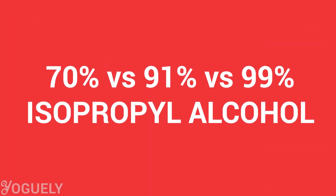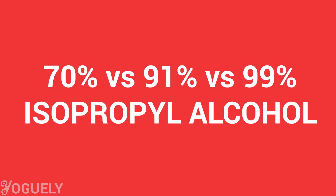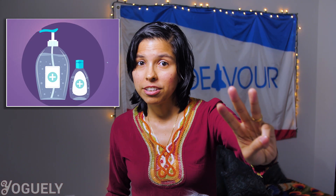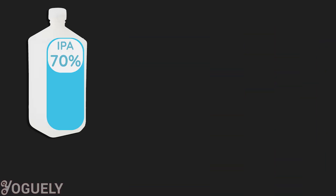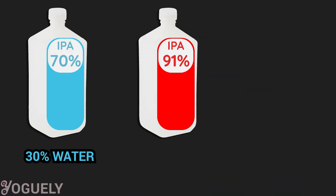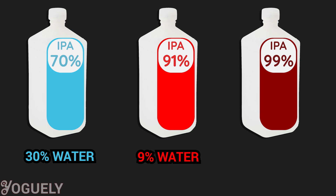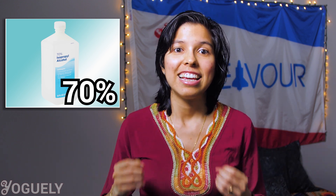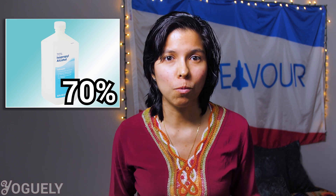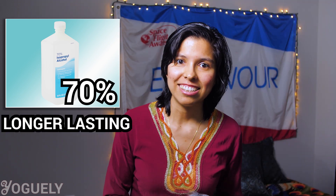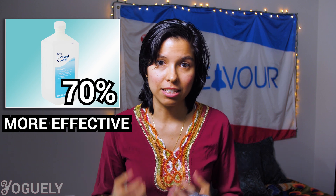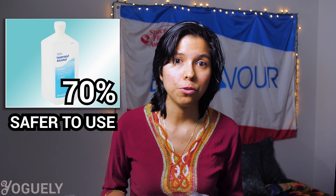What's the difference between 70%, 91%, and 99% isopropyl alcohol? You've probably seen three concentrations of diluted isopropyl alcohol being sold. The difference is the ratio of isopropyl alcohol to purified water: 70%/30%, 91%/9%, and 99%/1%. Which is better for disinfecting? Here are three reasons why 70% isopropyl alcohol is in most cases the optimal concentration you will ever need at home: it is longer lasting, it is more effective as a disinfectant, and it is safer to use and store.